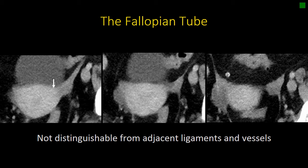First, you have the uterine cornea, and extending from the uterine cornea towards the adnexa, we have the broad ligament. Associated with the broad ligament is going to be the fallopian tube, collateral vessels that go between the ovarian artery and vein and the uterine artery and vein, and the ovarian ligament, or utero-ovarian ligament. We also can see the round ligament extending from the adnexa anteriorly towards the inguinal ring. Moving more superiorly, we still see this area — often referred to as the mesovarium or the vascular pedicle — that contains the fallopian tube and the collateral vessels. And as we continue to move up, we begin to see a portion of the ovary and the fimbria of the fallopian tube.